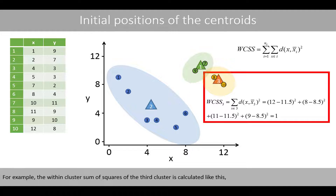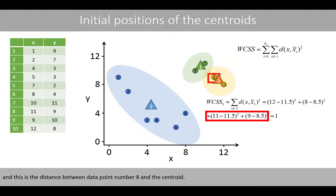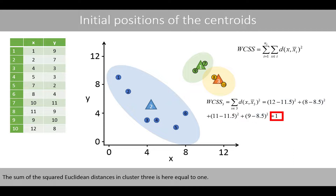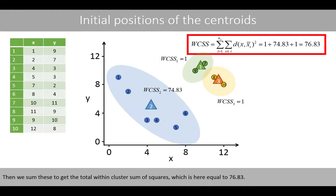For example, the within-cluster sum of squares of the third cluster is calculated as the sum of squared Euclidean distances, where these terms represent the squared Euclidean distance between data point number 10 and the centroid of the third cluster, and this is the distance between data point number 8 and the centroid. The x and y coordinates of the third centroid are 11.5 and 8.5. The sum of the squared Euclidean distances in cluster 3 is equal to 1. We calculate the within-cluster sum of squares for the two other clusters in a similar way, then sum these three to get a total within-cluster sum of squares equal to 76.83.